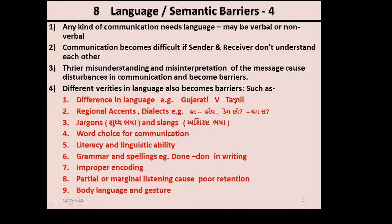For example, one person is Gujarati and another is Tamil. If they don't understand each other's language, they can't communicate. Sometimes, because of accent and dialect, they can't understand each other. Even if they share a language, differences in accent and dialect can prevent understanding.